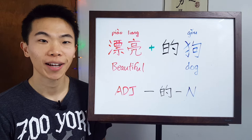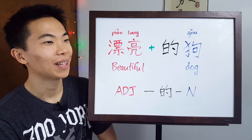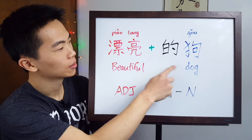So to describe any noun in Chinese with an adjective, all you have to do is remember this structure: adjective 的 noun. That looks really familiar, like what we learned last week. So this should be easy, right?